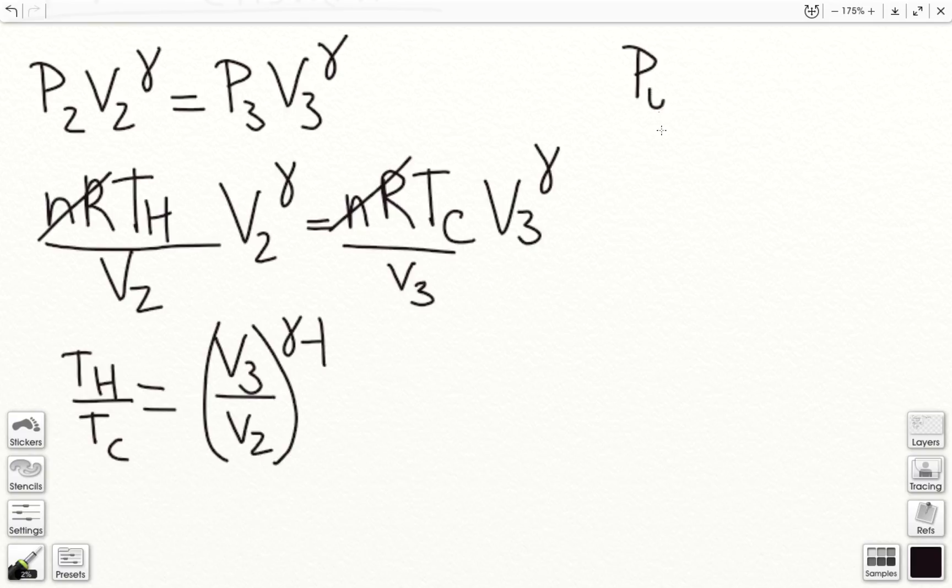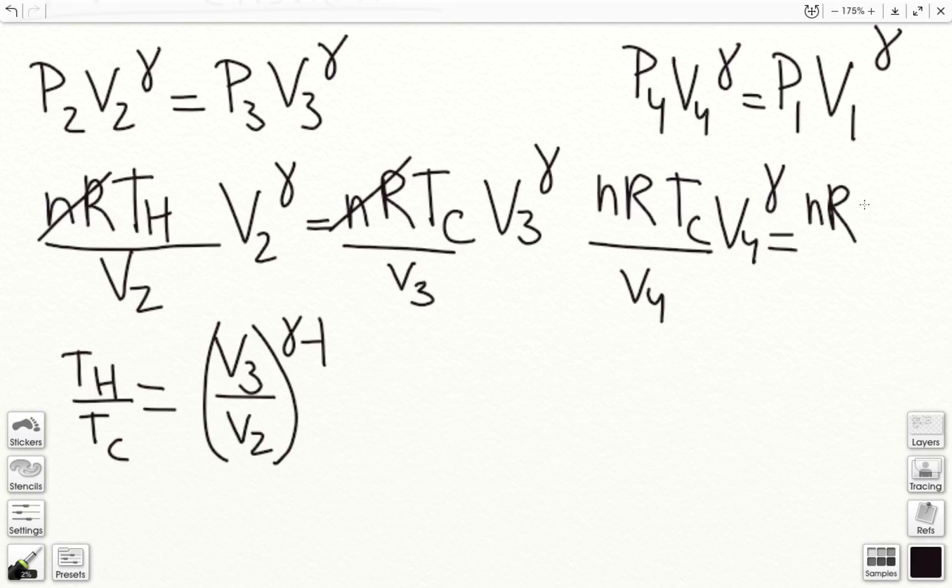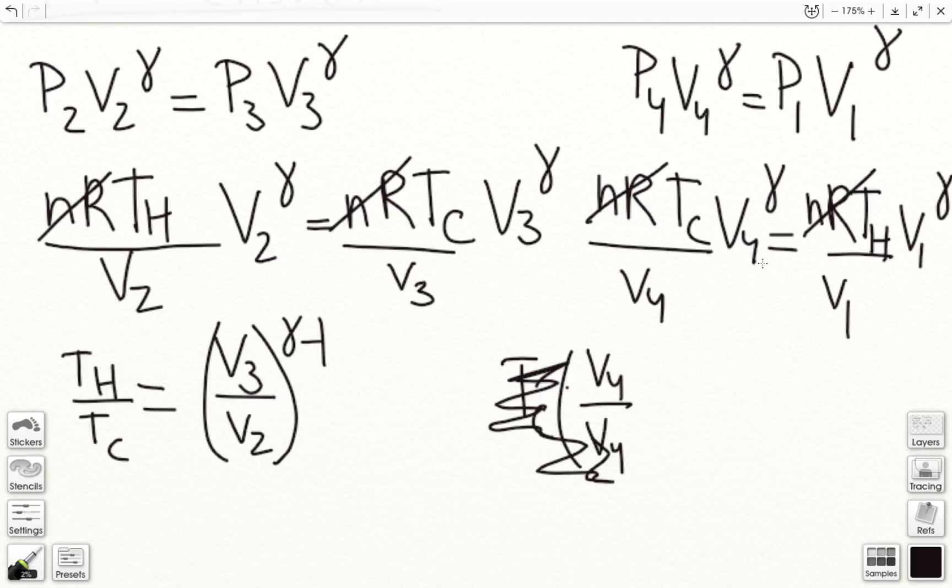Similarly, we've got P4V4 gamma is equal to P1V1 gamma. Temperature at state 4 is Tc. And the temperature at state 1 is Th. So this is the same thing, we cancel out nR. And so here, we have Th over Tc is going to equal v4 over v1 to the gamma minus 1.